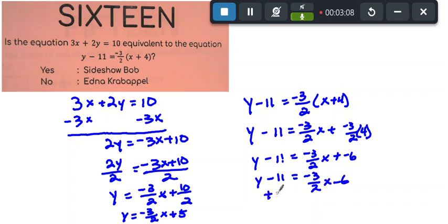Now I'm simply going to add 11 to both sides of the equation, and I get y equals negative 3 halves x plus 5.